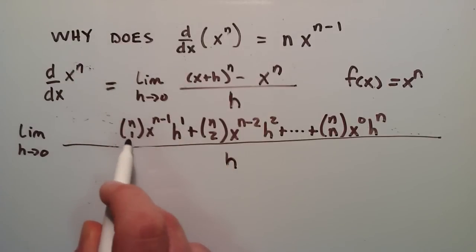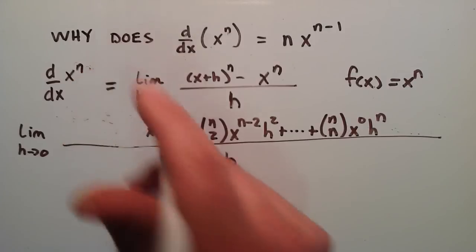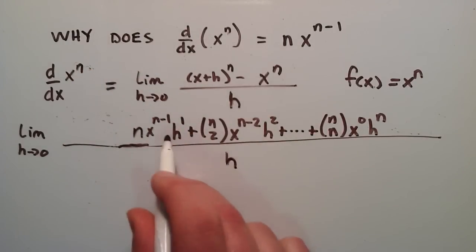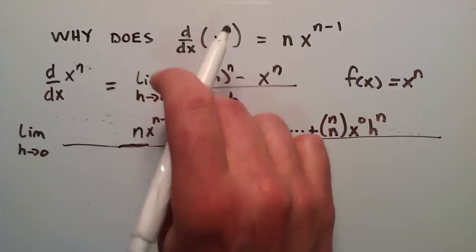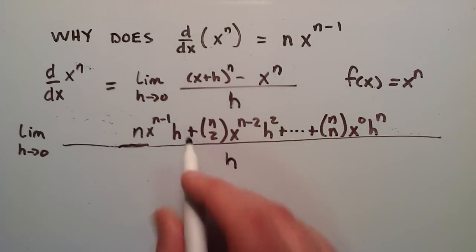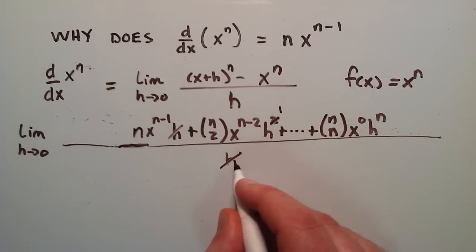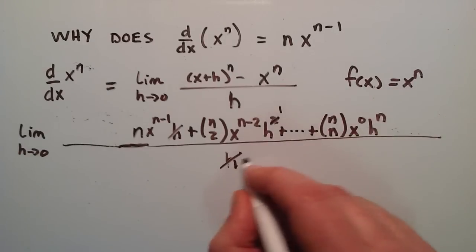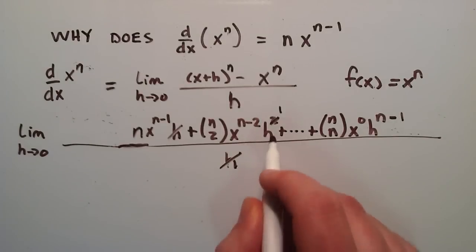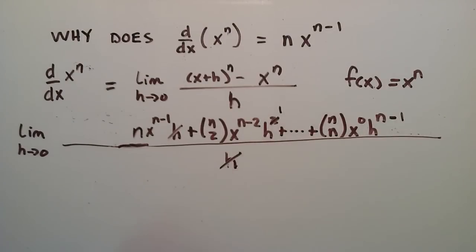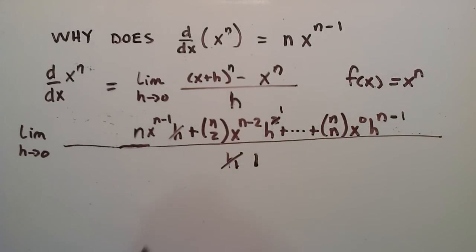Now let's look at n choose 1. If we calculate that combination, we find it's simply equal to n. Now let's divide each of these terms by h. This term has h to the first power, so h divided by h cancels out. The next term's h cancels with the denominator h, leaving h to the first power. At the very end, the h cancels with one of the h's, leaving h to the n minus 1. And in all the terms in between, we divide out an h from each term.